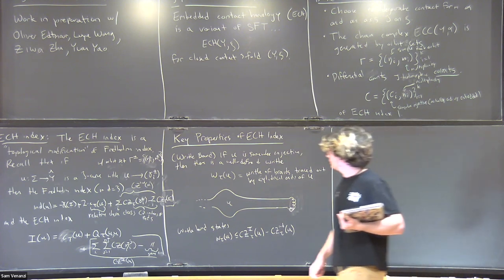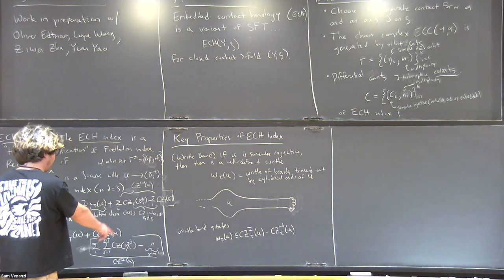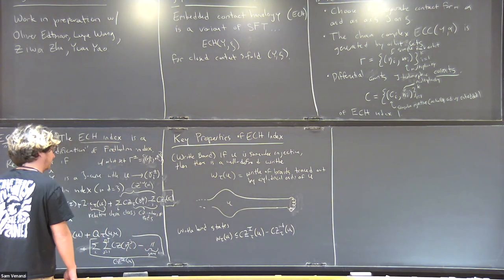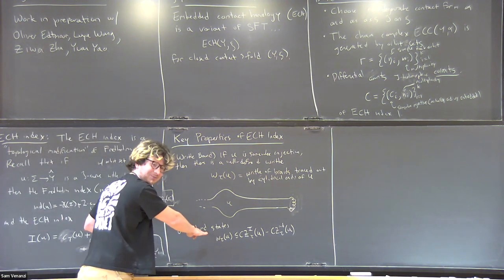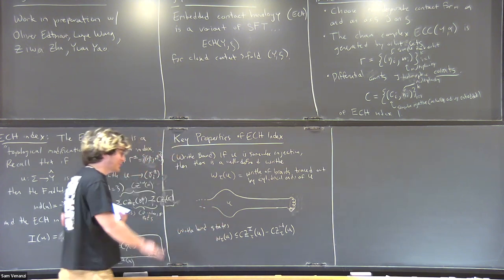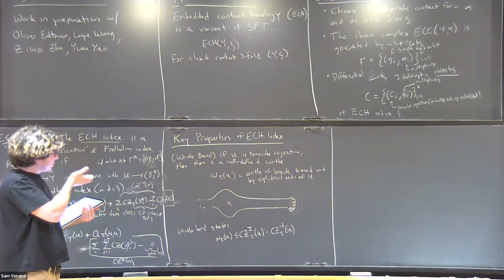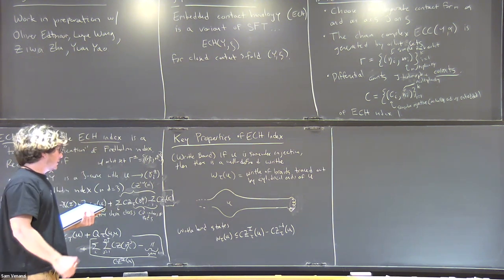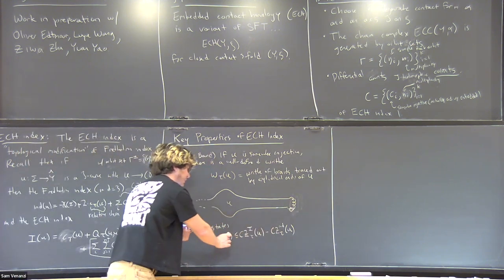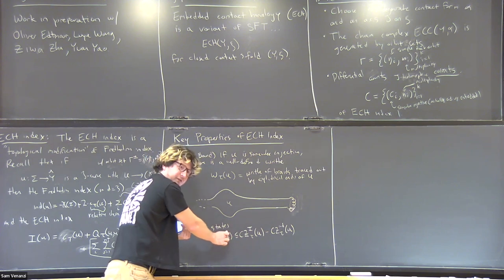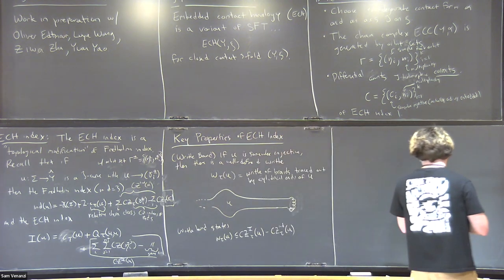The writhe can be made negative by changing the trivialization—if you change framing, you can make the writhe negative. The key point is that the difference in Conley-Zehnder terms should really be interpreted as an almost exact measurement of this writhe—a very good upper bound that's an equality in nice situations.